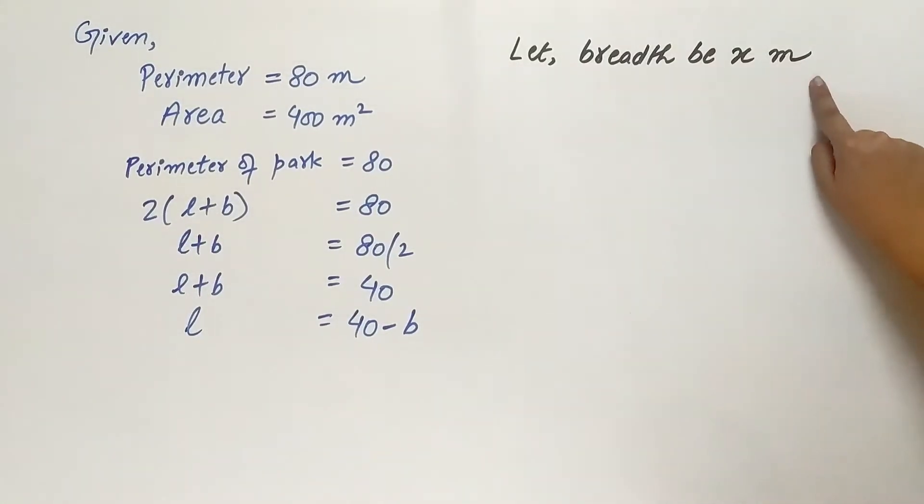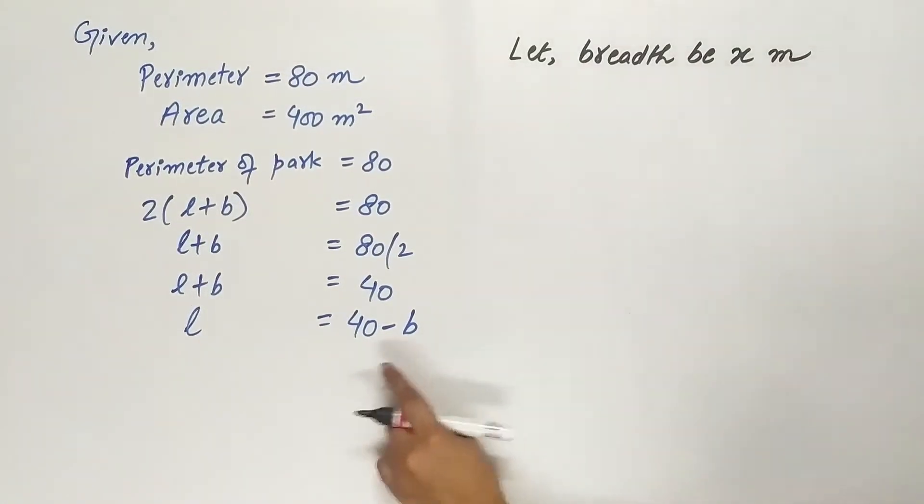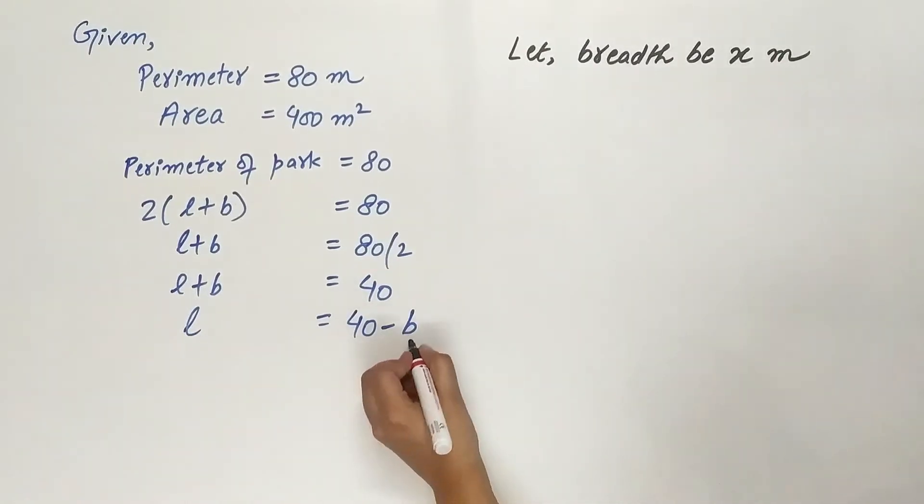So length is equal to 40 minus breadth. Let breadth be x meters. So our length will be 40 minus x.